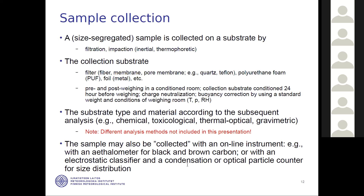The proper substrate should be chosen according to the subsequent analysis — for example, chemical analysis, toxicological analysis, thermal optical analysis, or gravimetric analysis — as different filter types are used for different analyses. These different analysis methods are not included in this presentation; they would definitely need a longer presentation. The sample may also be collected with an online instrument, for example an aethalometer for black carbon and brown carbon concentration, an electrostatic classifier, or a condensation or optical particle counter for size distribution.